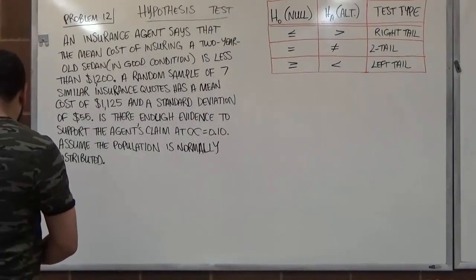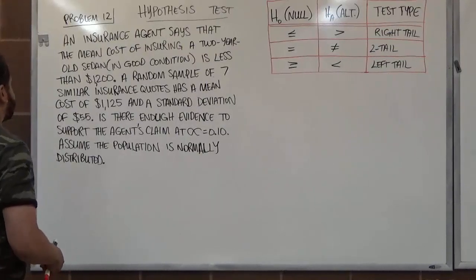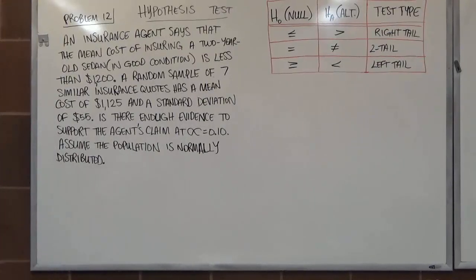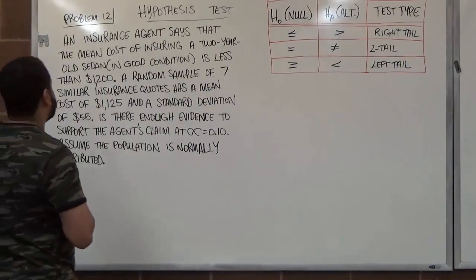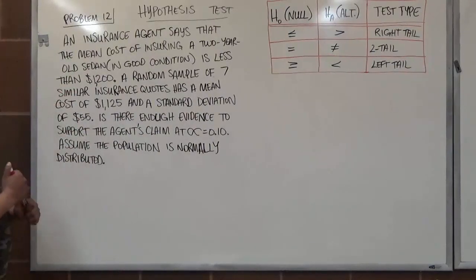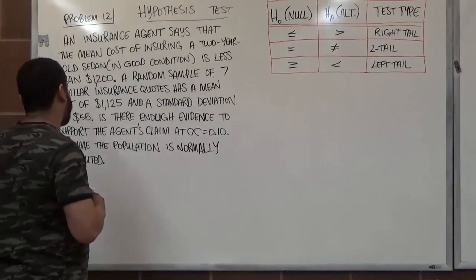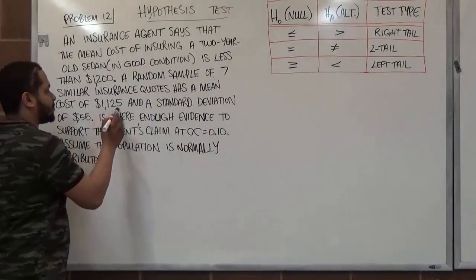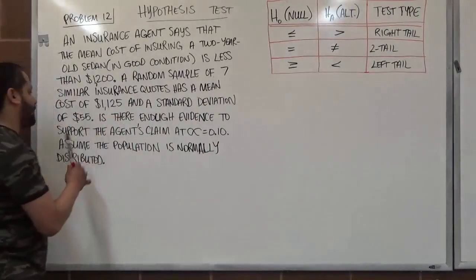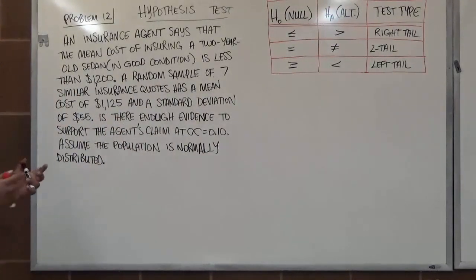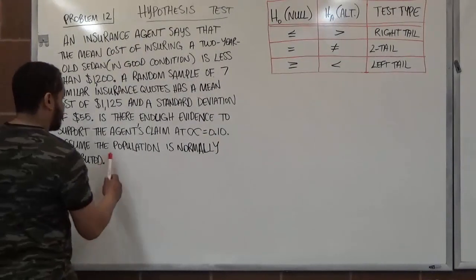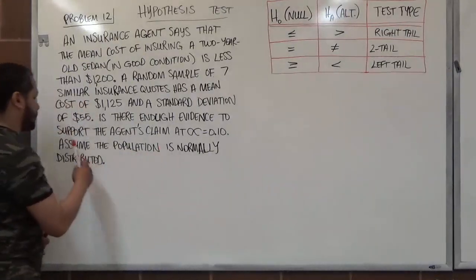In this problem, an insurance agent says that the mean cost of insuring a 2-year-old sedan in good condition is less than $1,200. A random sample of 7 similar insurance quotes has a mean cost of $1,125 and a standard deviation of $55. Is there enough evidence to support the agent's claim at a significance level of 10%?